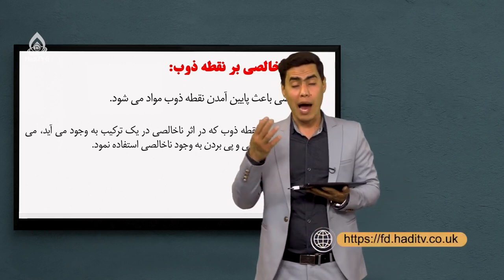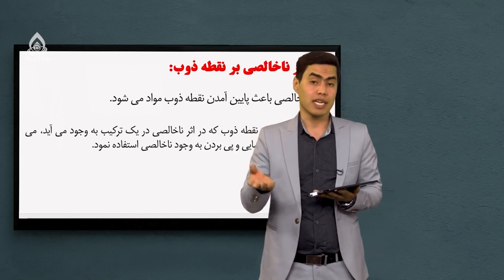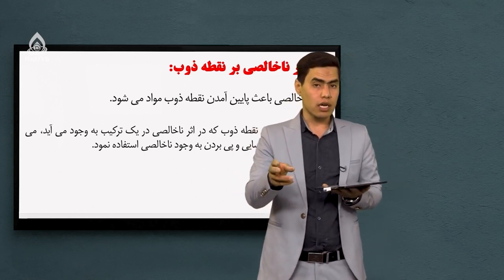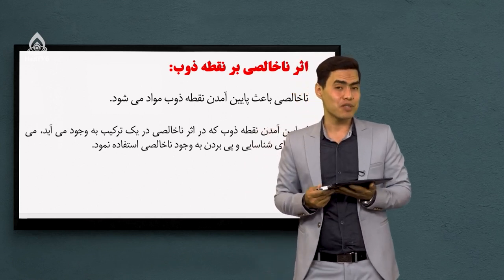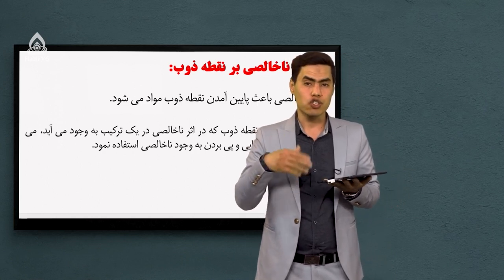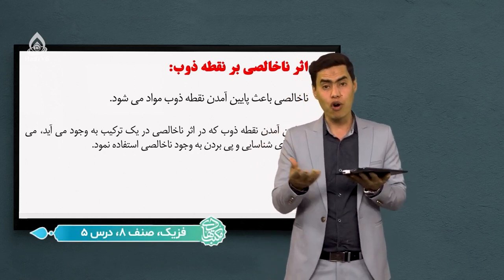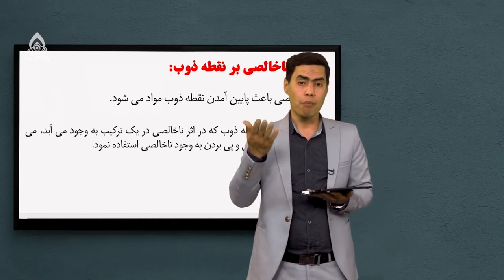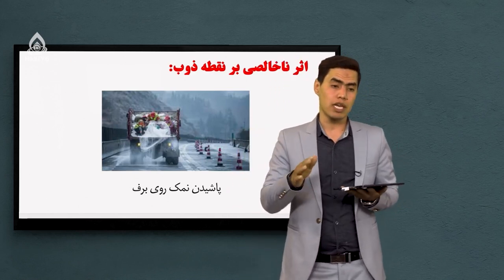ناخالصی باعث پایین آمدن نقطه ذوب مواد میشه. یکی از کاربردهای این اینه که ما می‌تونیم برای شناسایی مواد از آن استفاده کنیم. مثلاً یک ماده‌ای داریم که نقطه ذوبش رو از قبل می‌دانیم. حالا می‌خوایم آزمایش کنیم که آیا این ماده‌ای که خریداری کردیم خالصه یا ناخالص؟ نقطه ذوبش رو بررسی می‌کنیم. نقطه ذوب درجه حرارتیه که در اون درجه جسم جامد شروع به ذوب شدن میکنه. پس اگر جسم ناخالص باشه نقطه ذوبش پایین می‌آد.